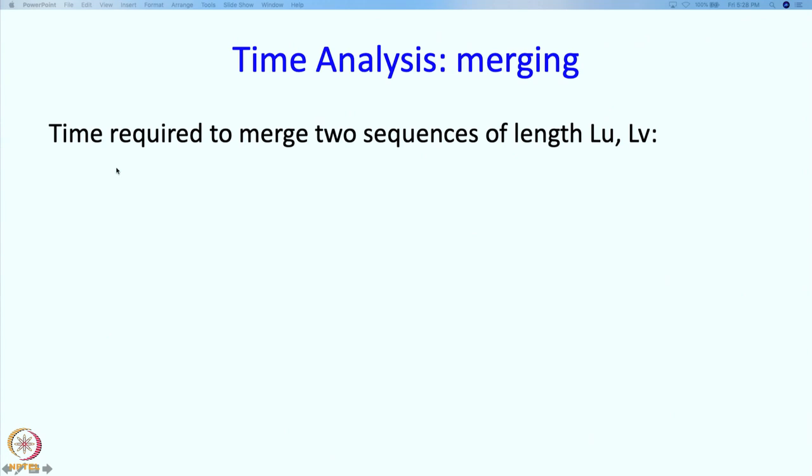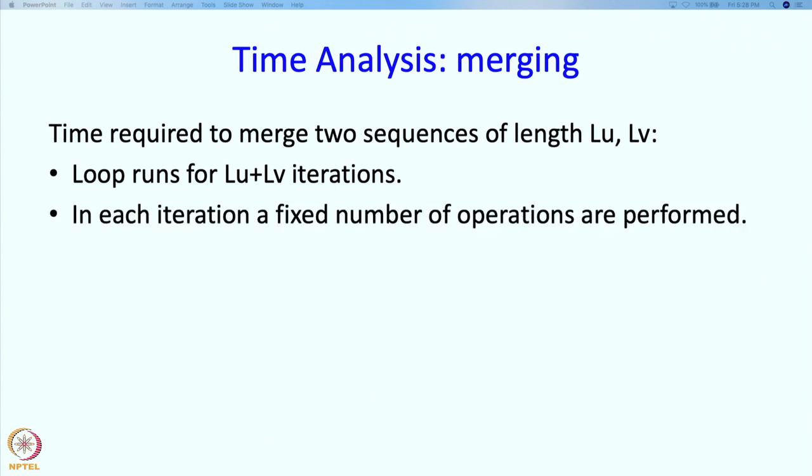So if you are merging two sequences of length LU LV, the loop runs for LU plus LV iterations. We do a fixed amount of work in each iteration and so the time is proportional to LU plus LV.